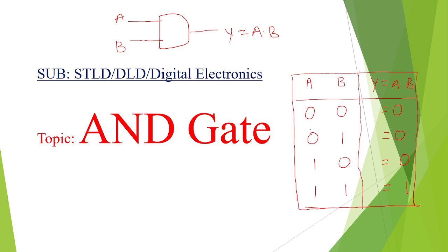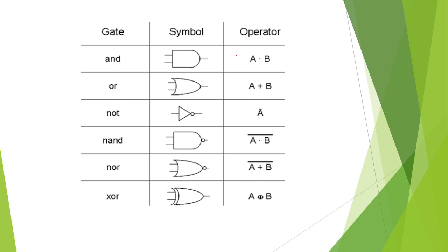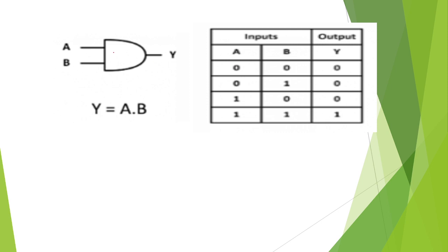We can see the AND gate symbol here. Of course, there are different symbols for OR gate, NOT gate, NOR gate, and XOR gate, but now we are discussing the AND gate which has two inputs.